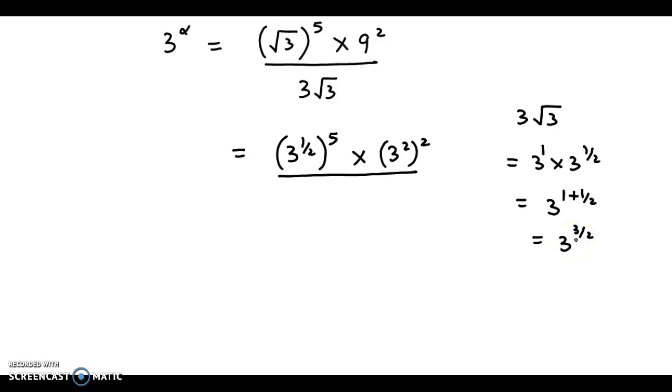So we have 3 raised to 3 by 2. We just put it over here, this is 3 raised to 3 by 2. Now half into 5 that gives us 5 by 2.